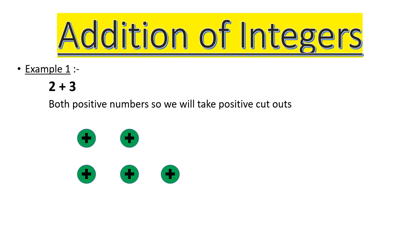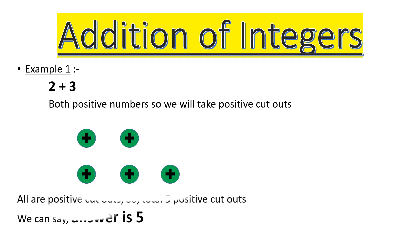All the cutouts are green cutouts, so we will add all of them together. We get five. So the answer to this example is five.